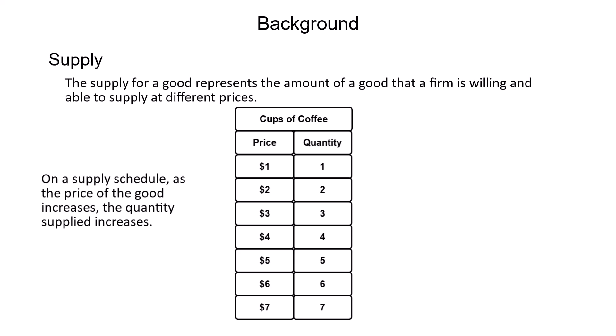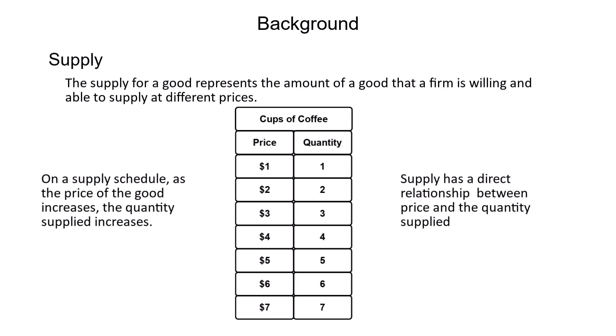So as the price increases, firms are willing and able to supply more of the good. So the relationship between price and quantity supplied is a direct relationship.